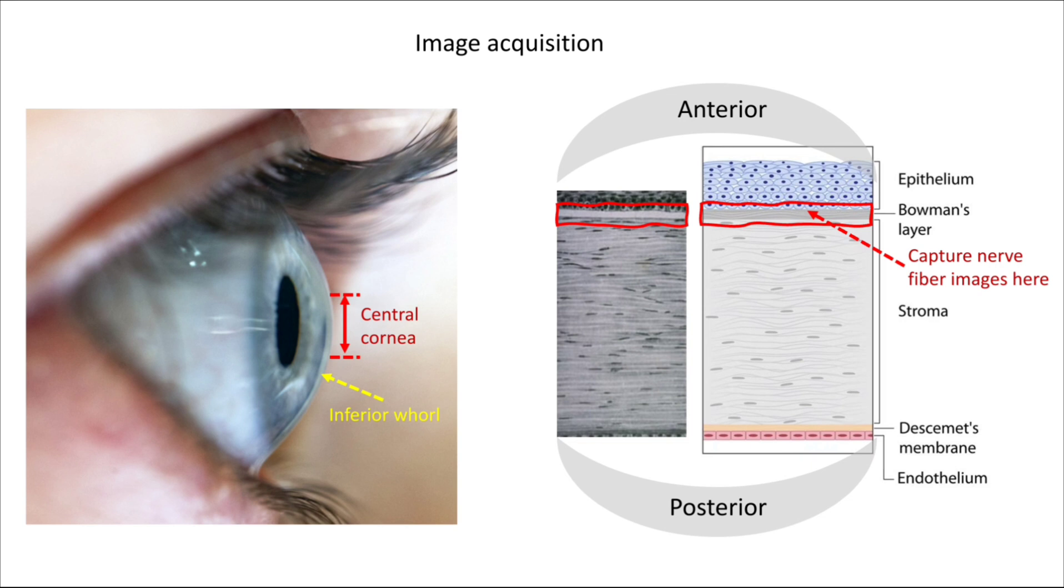Looking at the photo on the left, we capture images within the central cornea and a little bit below it in the inferior hole.